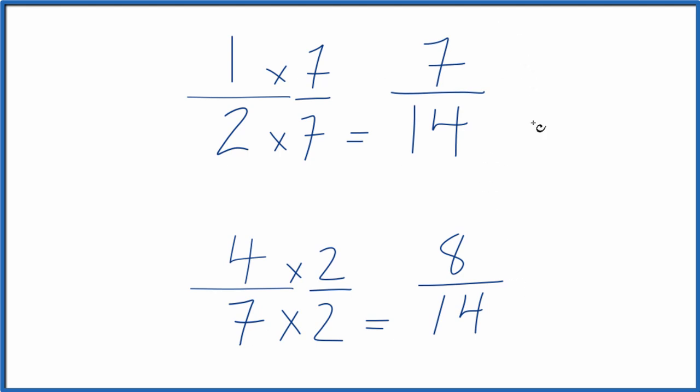And now we can compare these two fractions because the denominator is the same. It's 14. And since 8 is greater than 7, 8 14ths is greater than 7 14ths. And therefore, 4 7ths is greater than 1 half.